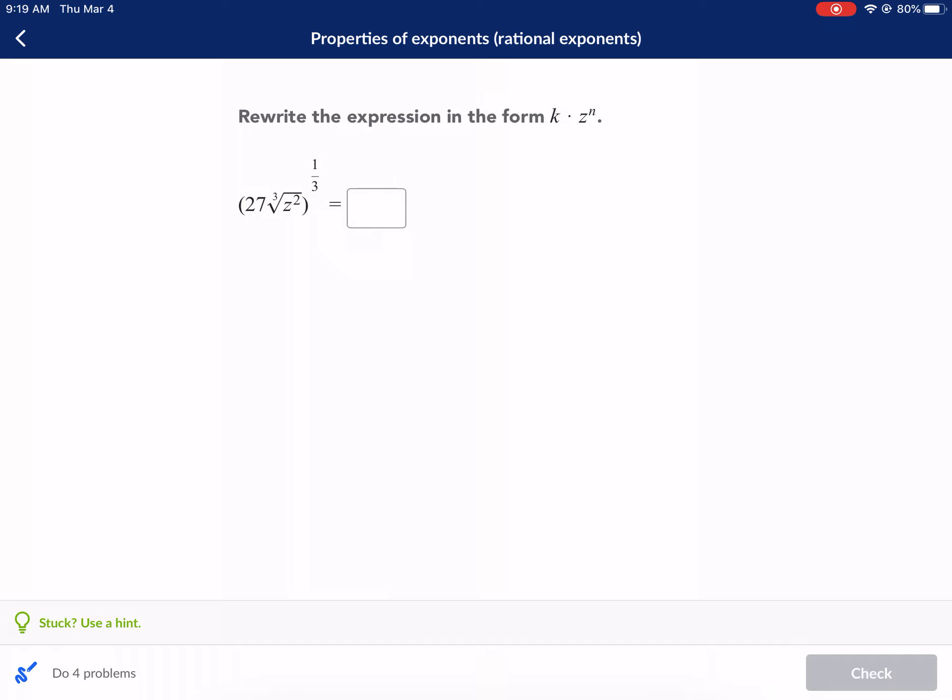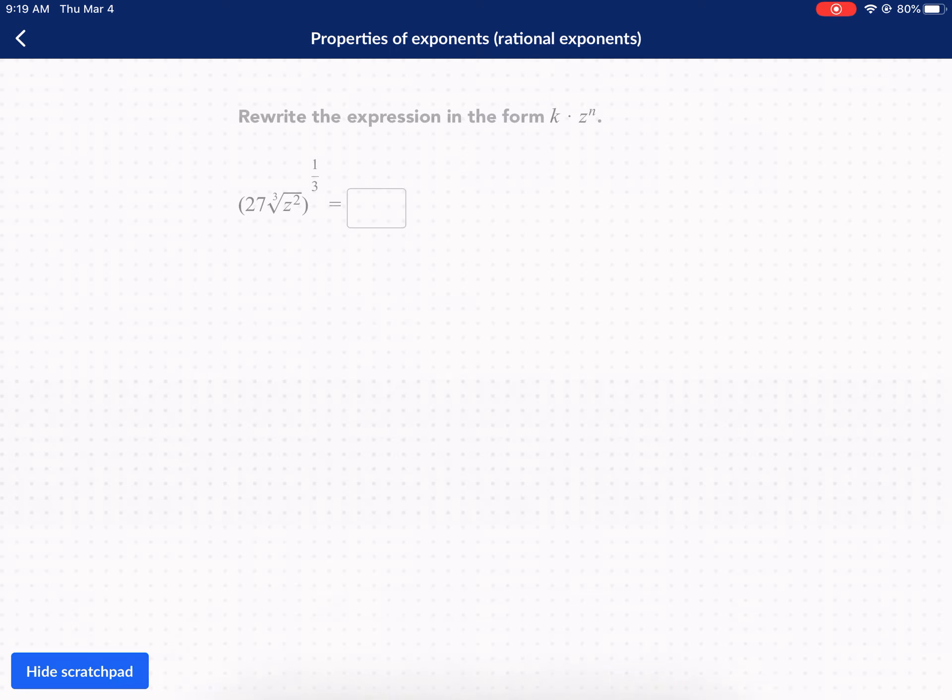So we have our first problem here. Rewrite the expression in the form k times z to the n. Essentially what we need to do is we need to have some constant number k, and then we have our variable with some exponent. Now, let's go ahead and take a look what we have to work with here.